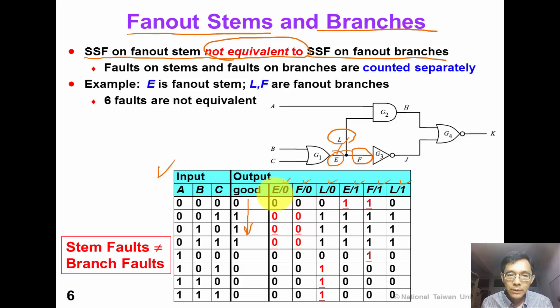And the 6 columns shows faulty outputs. With E stuck-at 0, F stuck-at 0, L stuck-at 0, E stuck-at 1, F stuck-at 1 and L stuck-at 1. We can see that the erroneous outputs are quite different. E stuck-at 0 is different from L stuck-at 0. E stuck-at 1 is different from F stuck-at 1.